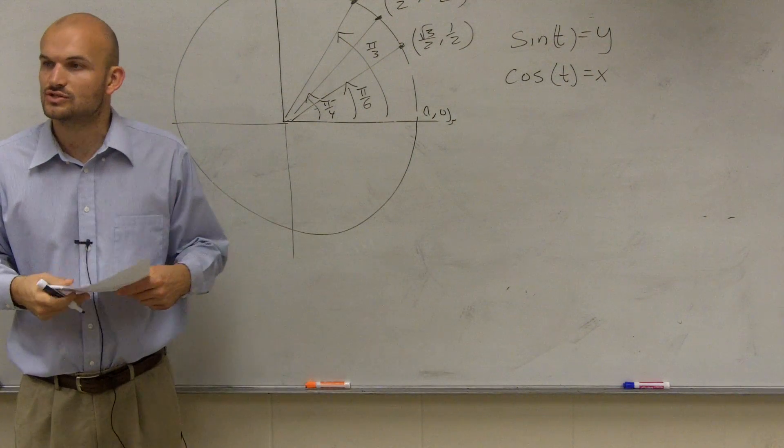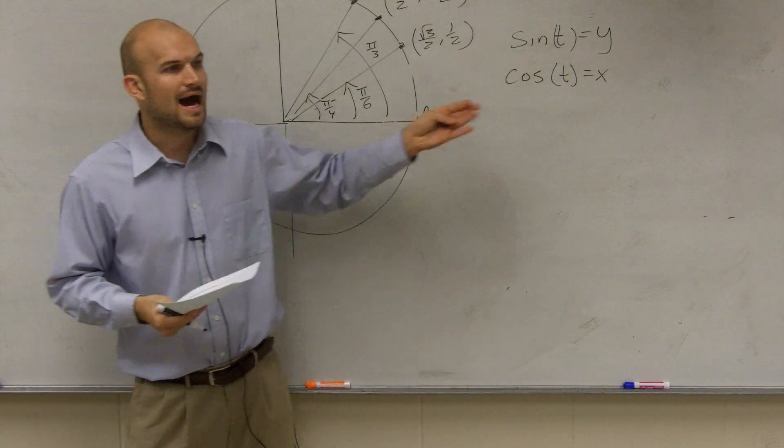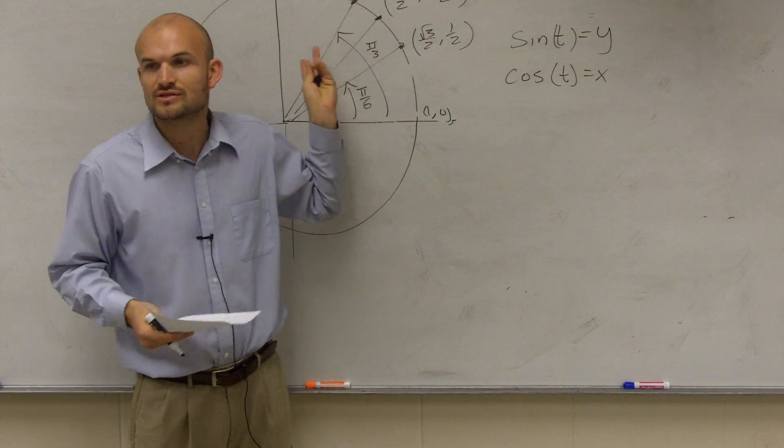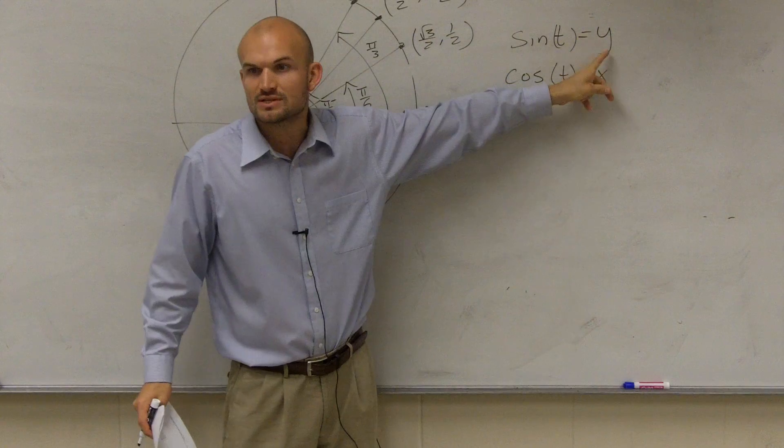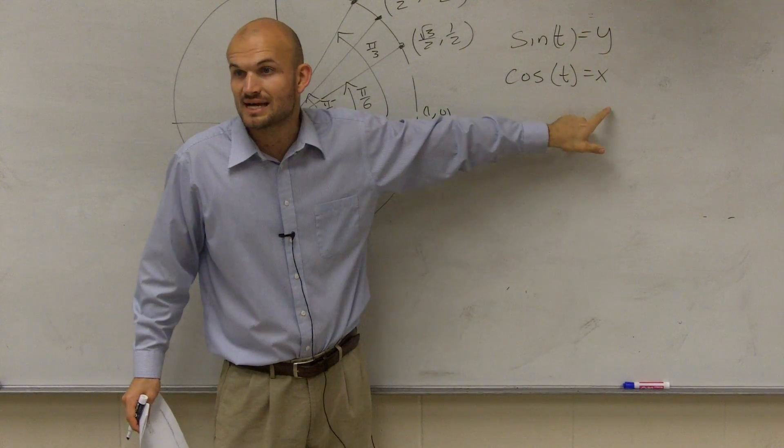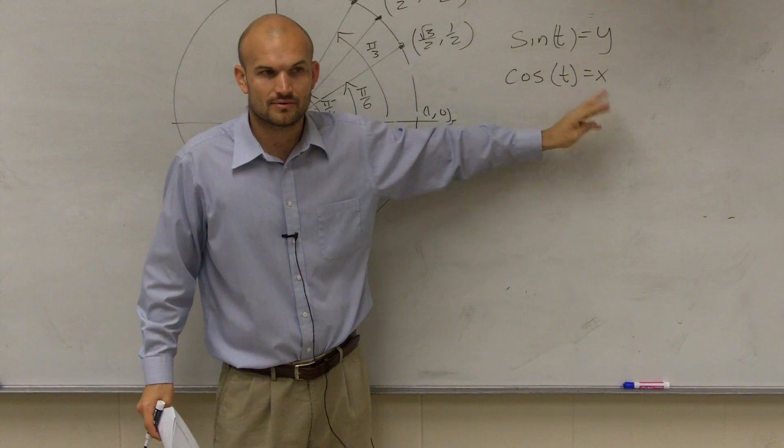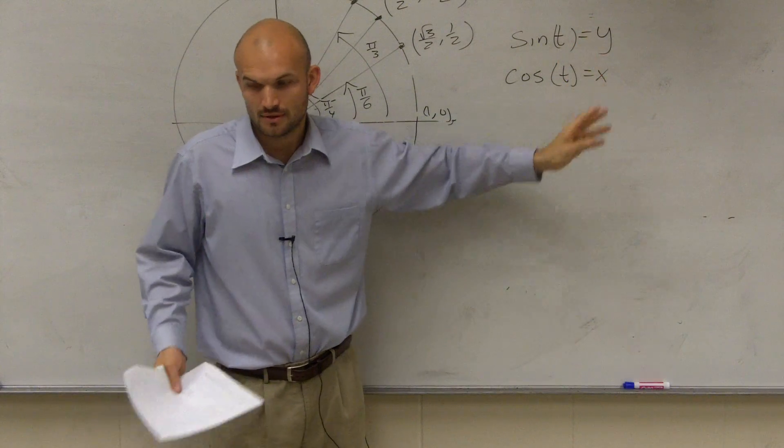Cosine is equivalent to the x, kind of like what we already went over, but remember, we're dealing with on the unit circle, so we don't need to do the whole opposite over hypotenuse because our hypotenuse is always 1. So we just represented it, it's just the opposite side, which was the y coordinate, or the adjacent side, which was just the x coordinate. Is everybody following me with these two?